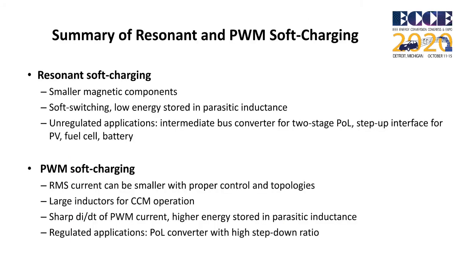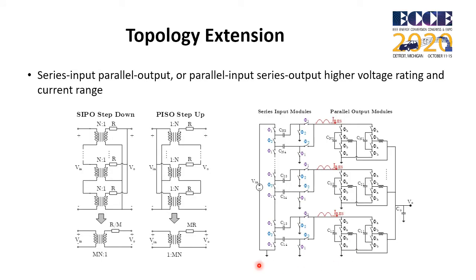Here is a comparison and summary. Resonant soft-charging only needs a smaller inductor. It can also achieve soft switching with low energy stored in parasitic inductance, but it is usually unregulated. The potential applications are the intermediate bus converter and the stepped-up interface for renewable energy. PWM soft-charging has lower RMS current with proper control, but requires larger inductors. The dI/dT of PWM current is high, making it more sensitive to parasitic loop inductance. It is usually regulated and suitable for voltage regulation applications. The merged two-stage hybrid switched capacitor converter can be configured as series input parallel output or parallel input series output to cover higher voltage and current ranges. The output impedance of the extended topology can be derived by connecting the output impedance of each module in parallel or in series.